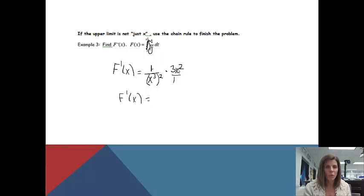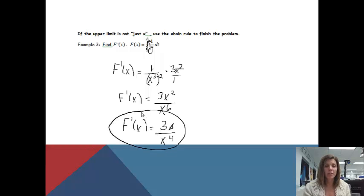So a few things that I'm going to do to simplify this problem. First of all, 1 times 3x squared is 3x squared. And then on the bottom, x to the third squared, we're going to multiply the exponents. 3 times 2 will be 6, so I'll get x to the sixth. And then I can actually go one step farther on this problem because the x to the second and the x to the sixth will cancel. And I'll end up getting 3 over x to the fourth. So that would be my derivative. A little bit trickier.